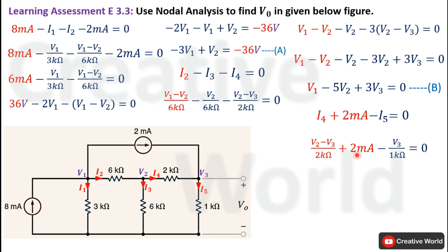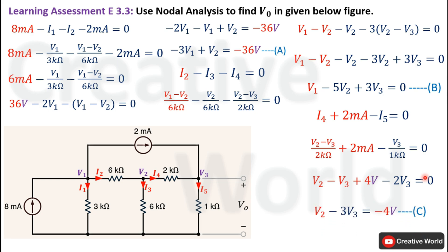Multiplying both sides by 2 kΩ to eliminate denominators: V2 minus V3 remains from the I4 term, 2 kΩ times 2 mA gives 4 V, and 2 kΩ times V3/1 kΩ gives 2V3. Combining the V3 terms gives minus 3V3, and placing the constant on the other side yields V2 minus 3V3 equals minus 4 V. This is labeled Equation C, the third node equation.